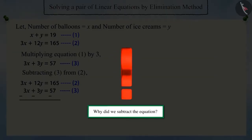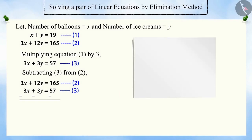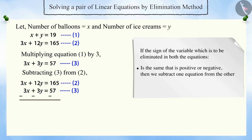Correct! If the sign of the variable which is to be eliminated in both the equations is the same, that is positive or negative, then we subtract one equation from the other. And if the signs are different, then we add both the equations. This eliminates one variable and gives a linear equation in one variable only.